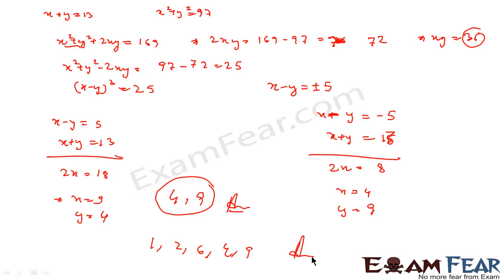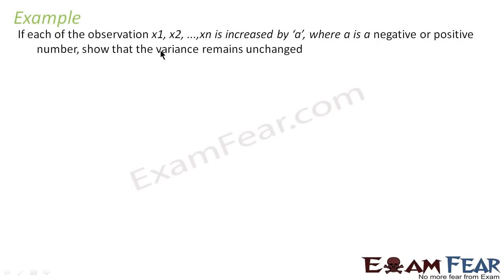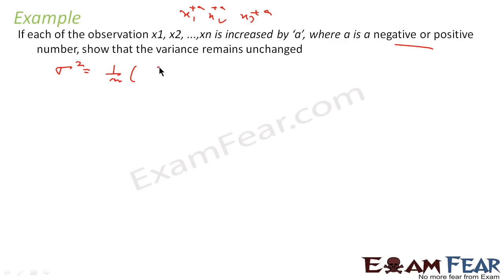We found the solution by forming equations in x and y and solving them. The next part of the question says: if each of the observations x₁, x₂, x₃ is increased by a — where a is a positive or negative number — we have to prove that the variance remains the same.